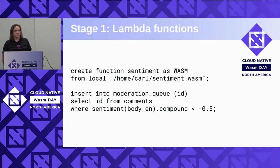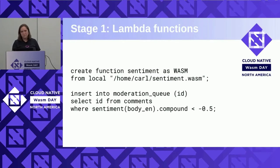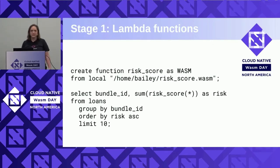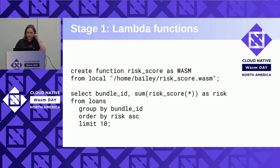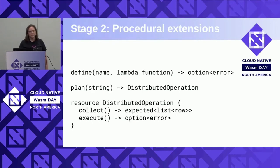The second example is sentiment analysis — reading in text and deciding if the sentiment was positive, negative, or neutral. For example, a customer had a really bad experience and you'd want to mark those negative comments for follow-up, like in a Google review. The third example is risk analysis — bundling up loans and deciding whether it's too risky to offer that bundle. All of these typically depend on a machine learning model that we've already trained and compiled to a WASM module.